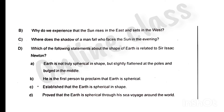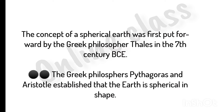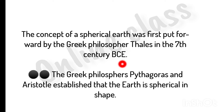We will answer all of these questions. The first one is the first chapter — we will revise that chapter. So you will correct the answer. Now let's start with the first one. The concept of the spherical earth was first put forward by Greek philosopher Thales in the 7th century BCE.